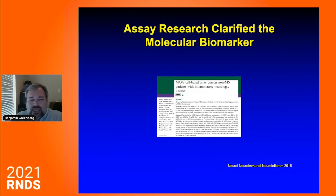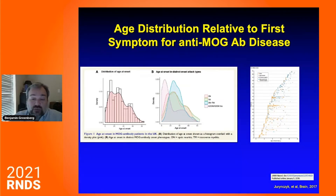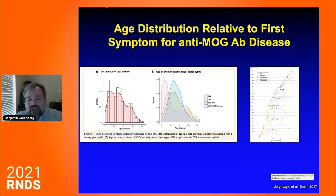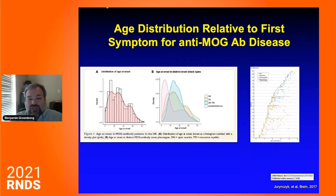As the blood test was perfected, we understood that this disease presents differently depending on how old the person is. If you're a child below the age of eight, it usually presents with ADEM — inflammation of the brain, optic nerves, and spinal cord. Ages eight to 12, you usually get optic neuritis. In the teenage years and later, you usually get transverse myelitis. The way the immune system caused damage changed over time, and we were able to see that this disease was a distinct entity.